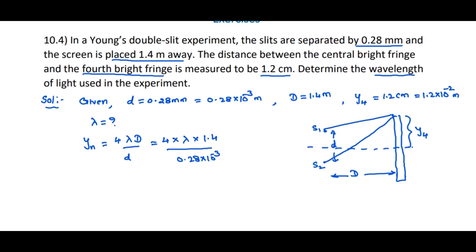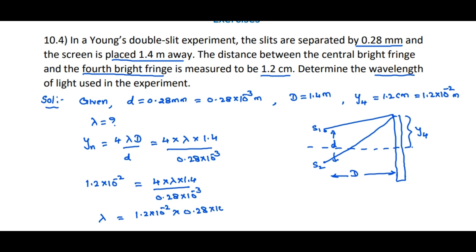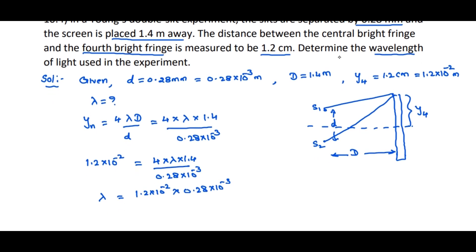From this, 1.2 × 10⁻² = 4λ × 1.4 / (0.28 × 10⁻³). Solving for lambda: λ = (1.2 × 10⁻² × 0.28 × 10⁻³) / (4 × 1.4). After simplification, we get λ = 6 × 10⁻⁷ m, which can also be written as 6000 Å.